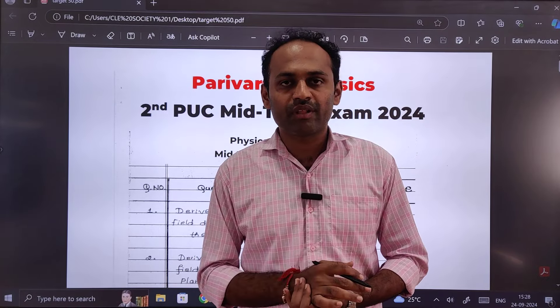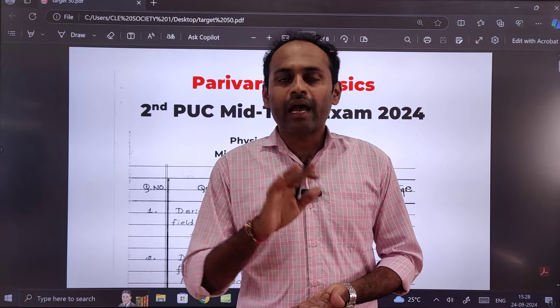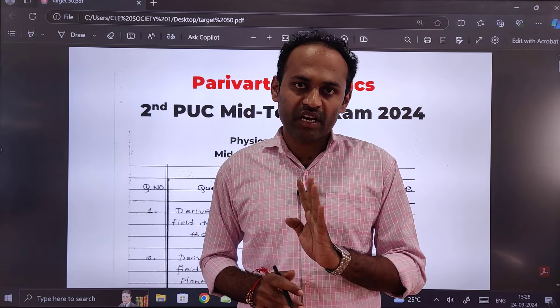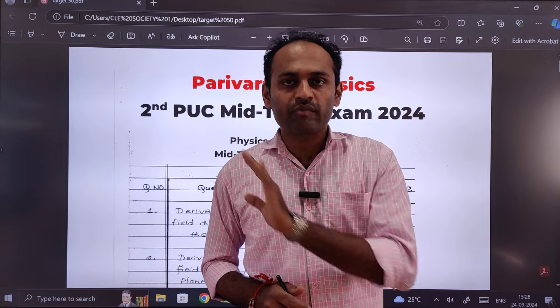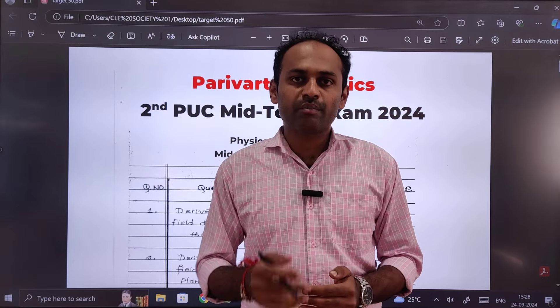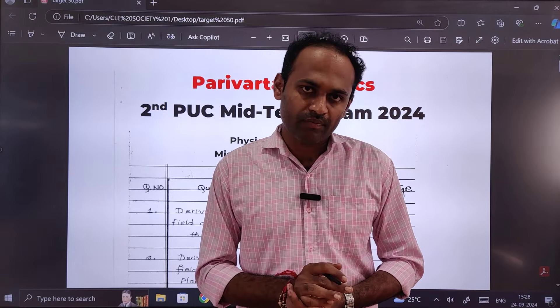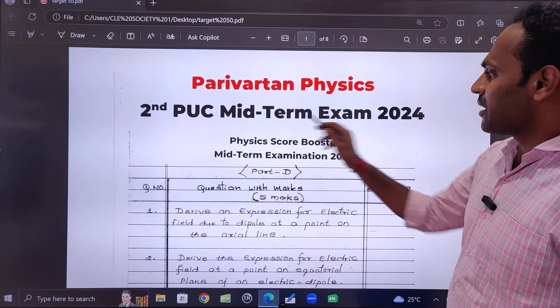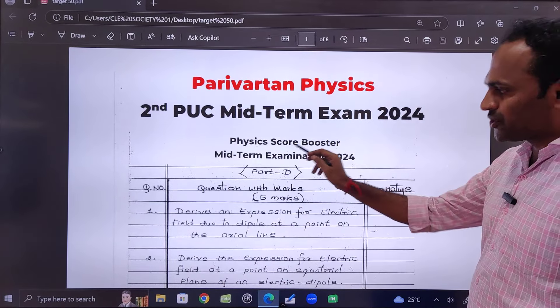I am not speaking about MCQ as well as fill in the blanks. I'm just covering two marks, three marks, five marks, and five marks numericals. If you practice these important questions, you can score at least 50 marks. This is a PDF for second PUC midterm exam 2024 physics, a midterm examination booster.